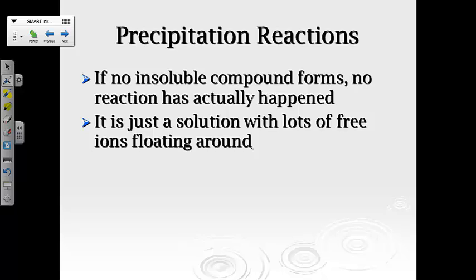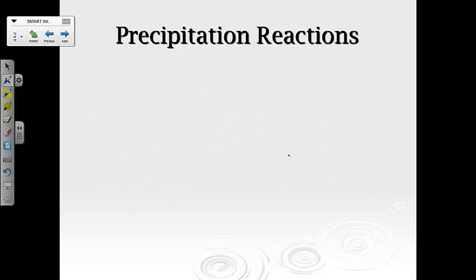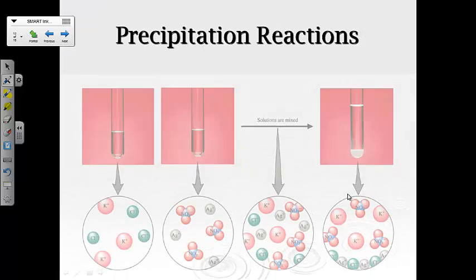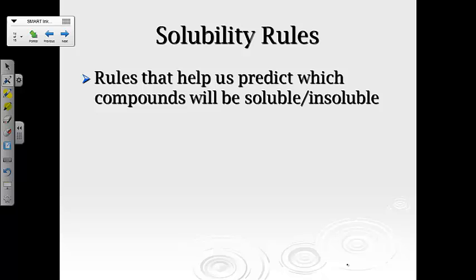Now, if no insoluble compound forms, no reaction has actually happened, it's just a solution with lots of ions floating around. So you got way more cations and anions floating around. Spectator ions are what we refer to as free ions not involved in the chemical reaction. So back here, our spectators would have been the potassium and the nitrate because they just kept floating around. Those were our spectators. All right, now, again, here is another one where you've got potassium chloride is gonna react with the silver nitrate. They combine and the silver chloride is gonna precipitate out of solution. It's gonna be that solid. But you still have some potassium and you still have some nitrate. So these guys up here, again, are all of these spectators. And so you're gonna see, be able to write some reactions based on what you see here in a little bit.